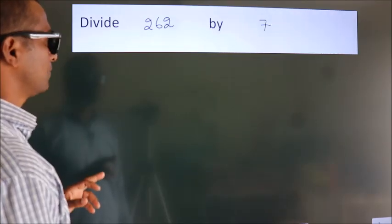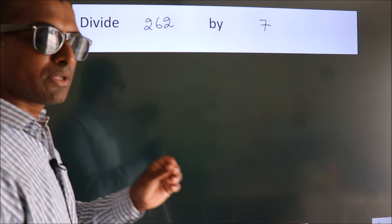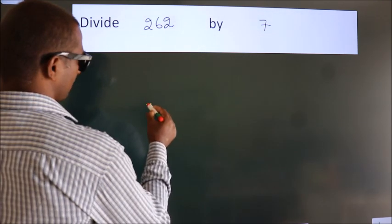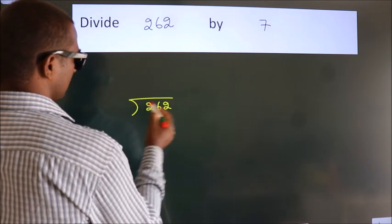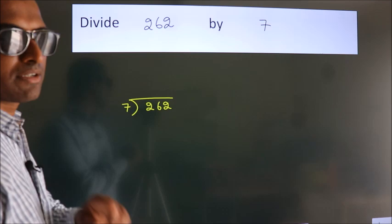Divide 262 by 7. To do this division, we should frame it in this way. 262 here, 7 here. This is your step 1.